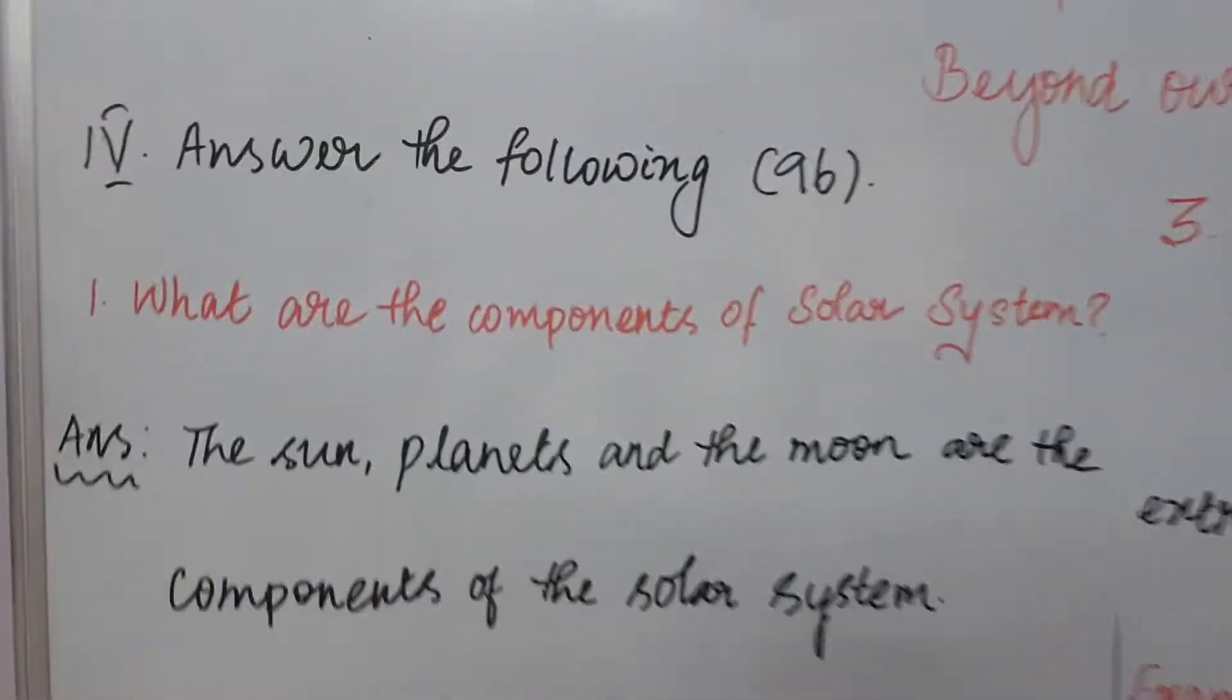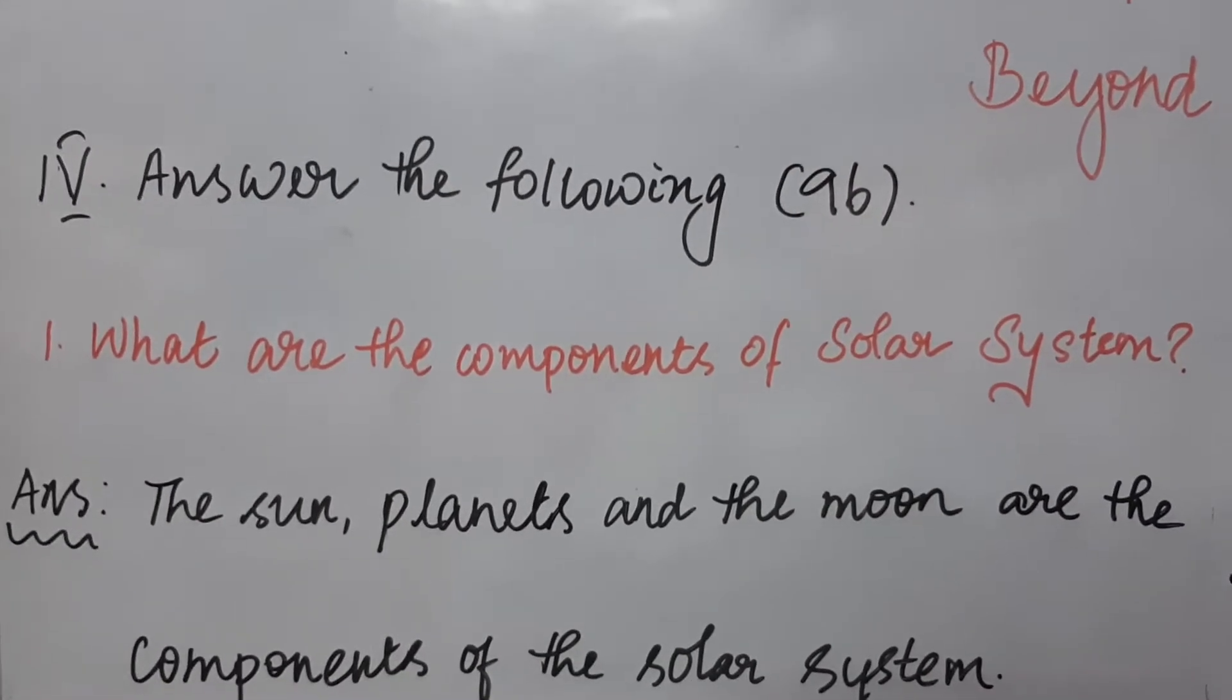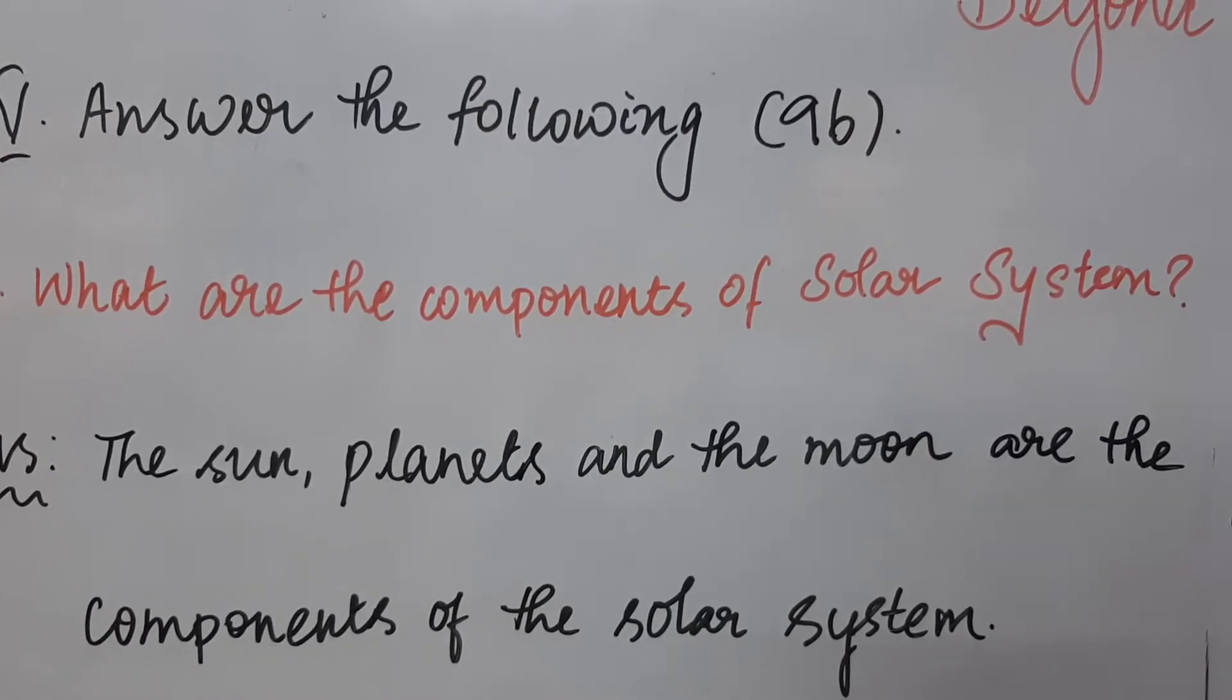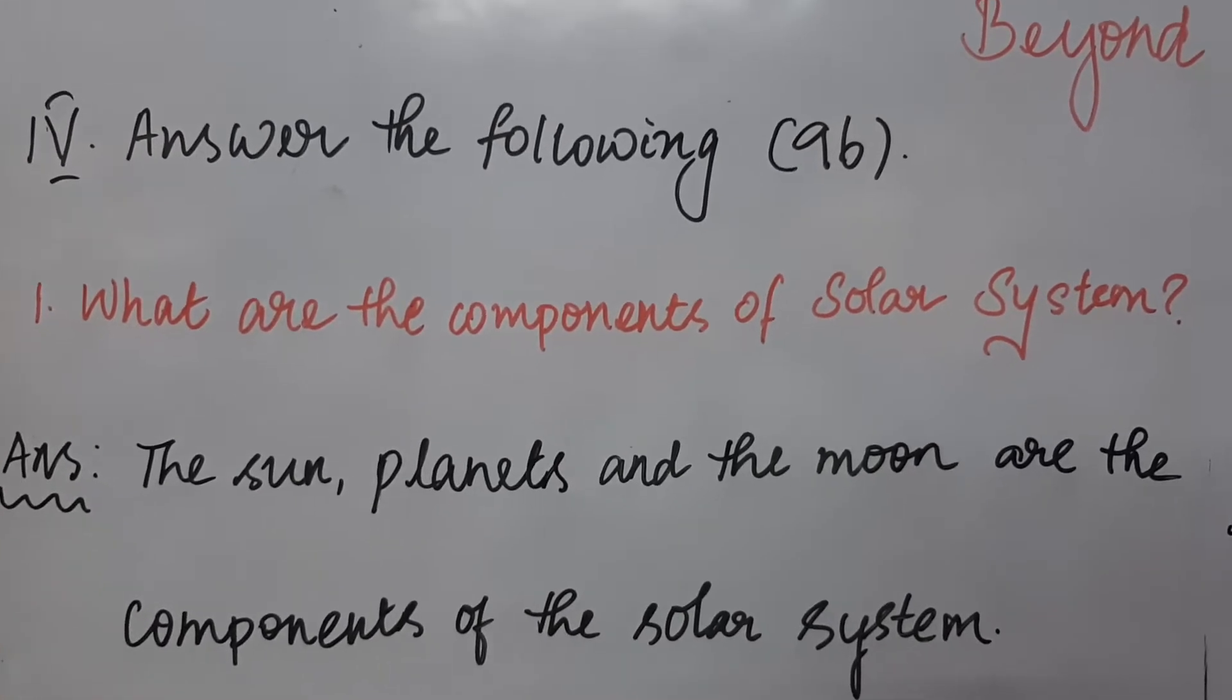So, what is the first question given? What are the components of the solar system? As you know already, the sun, the planets, and the moon are the components of the solar system. So this is the answer for question one.